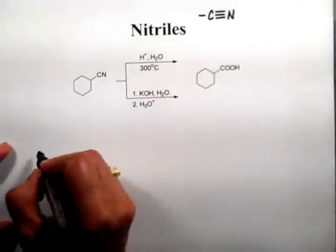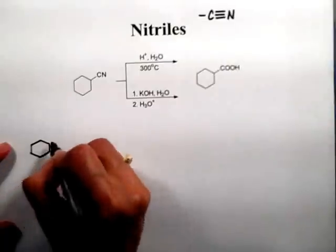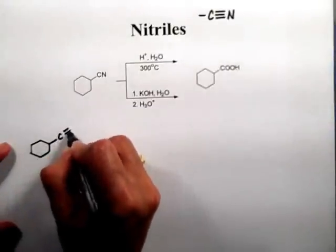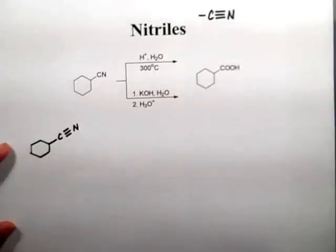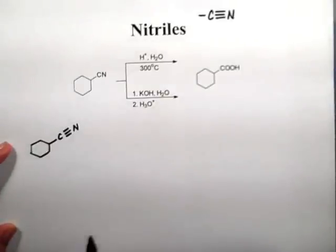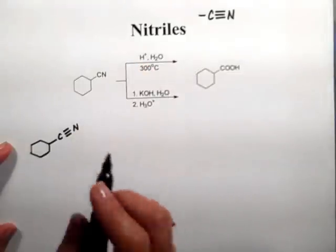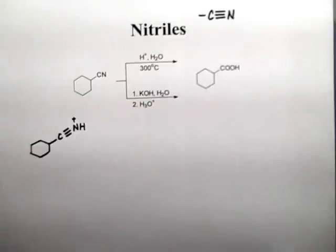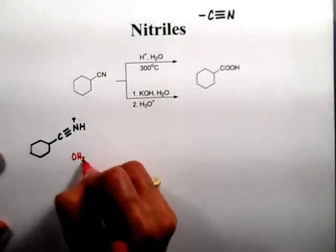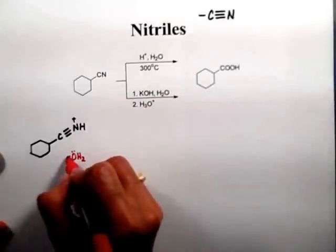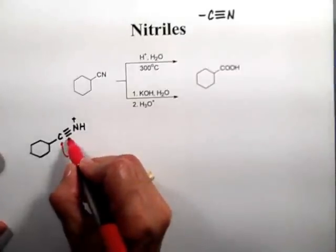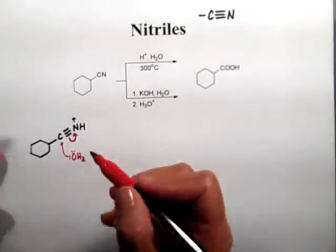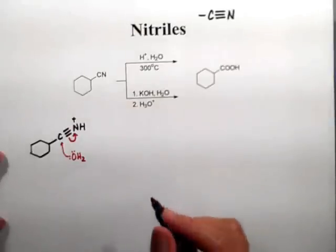I want to go through a bit of the mechanism — I do like this mechanism a lot. I'm going to show the triple bond between the carbon and the nitrogen and do the reaction under acidic conditions; the mechanism doesn't change all that much. Under acidic conditions, the first thing that happens is we protonate the nitrogen of the nitrile. Then water is going to attack the carbon of the nitrile, and we break the triple bond, giving the electrons to the most electronegative element — which in this case is the nitrogen.